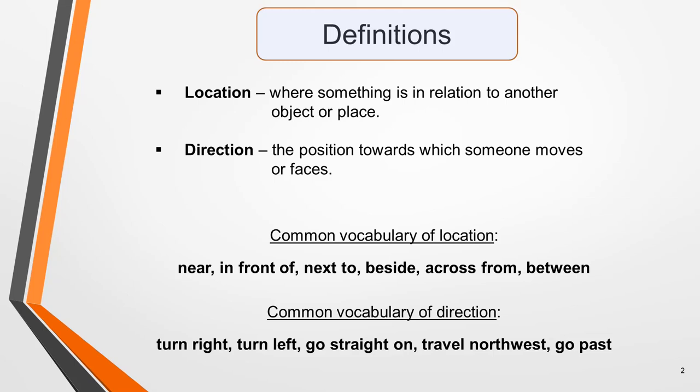In this video we'll look at five sets of vocabulary commonly used in map and plan questions, along with some sample sentences to show you the words and phrases used in context. Each set of sentences describes or gives directions on a map or plan, to give you some practice at visualising the information as you'll have to do in the test. We'll start with some simple prepositions of place.